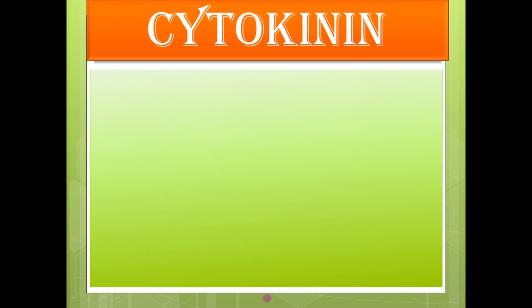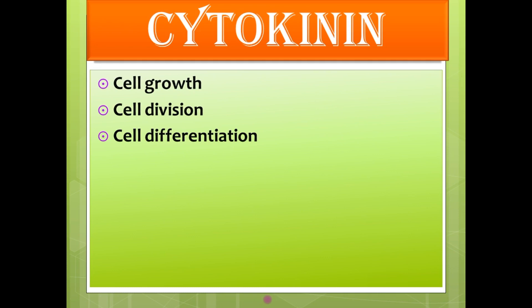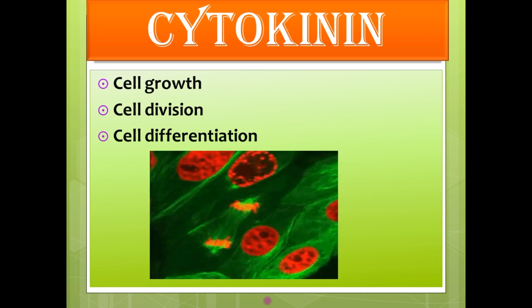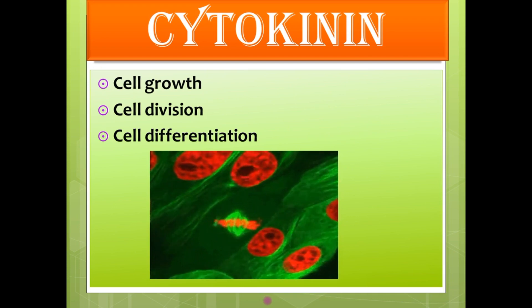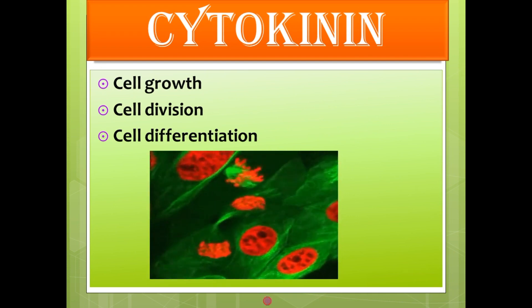Let's see the function of each plant hormone. Cytokinin helps in cell growth, cell division, and cell differentiation. Growth means enlargement in size of the cell, division means dividing into many, and differentiation means the cell becomes fully able to do its function properly. Here you can see the cell divides into two with the help of the hormone cytokinin.